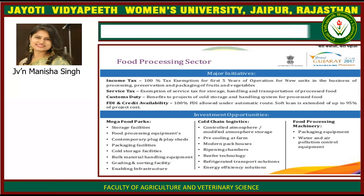Cold chain logistics opportunities include controlled atmosphere storage, modified atmosphere storage, pre-cooling at farm, modern pack houses, ripening chambers, refrigerated transport solutions and energy efficiency solutions. Food processing machinery includes packaging equipment and water and air pollution control equipment.